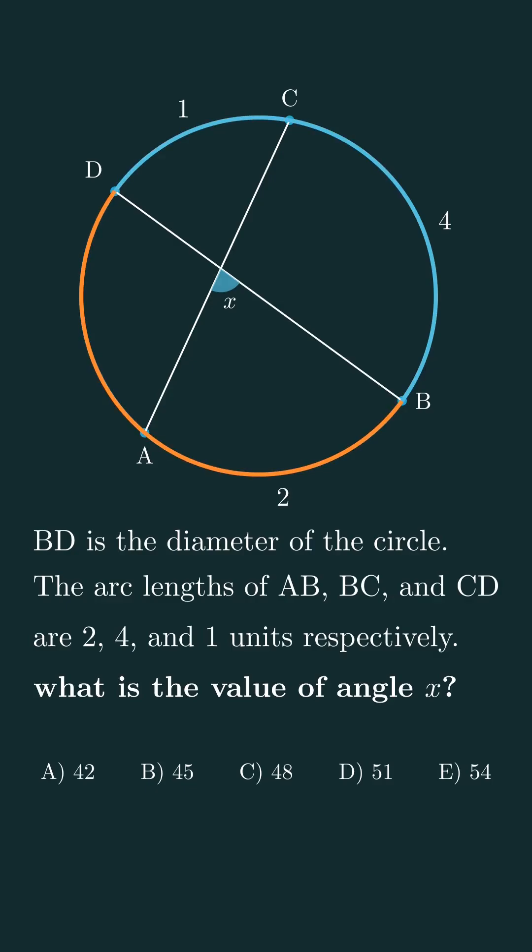In that case, if one half of the circle consists of arcs CD and BC, and their total length is 1 plus 4, which is 5 units, then the other half must also be 5 units. Since AB is 2 units, that means arc AD must be 3 units. So the total circumference of the circle is 10 units.